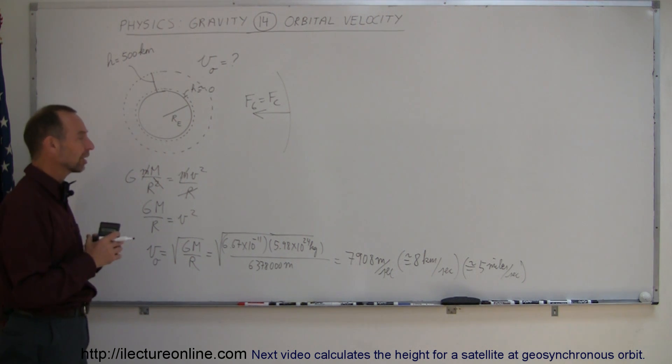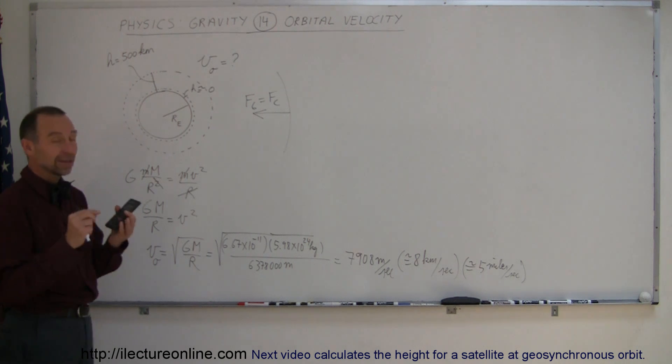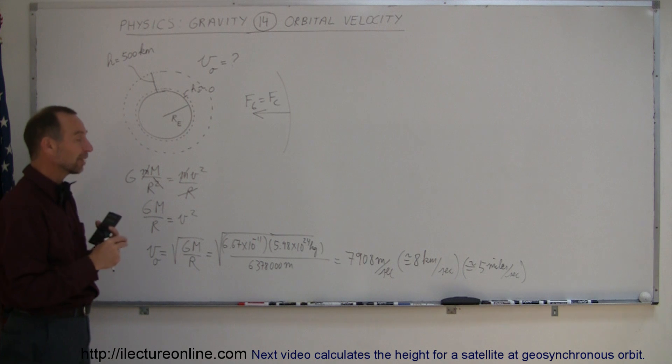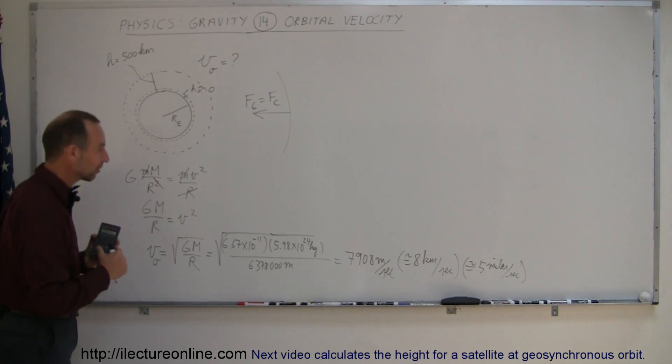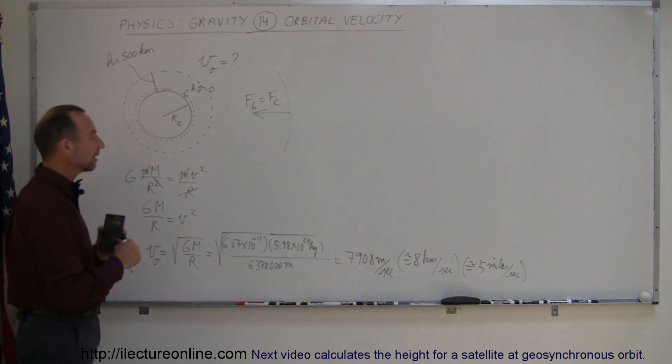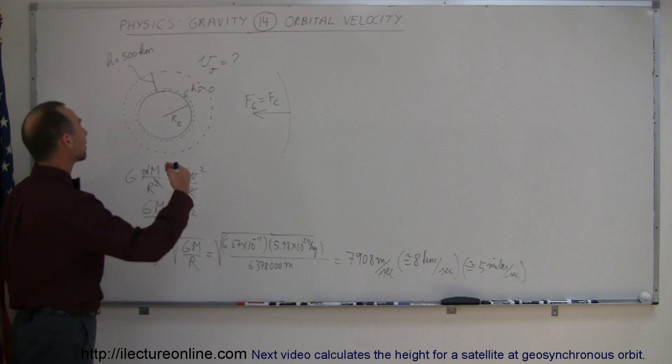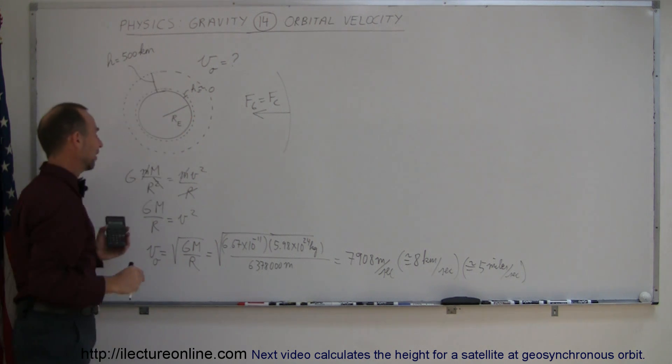Of course that's not quite realistic, because that close to the Earth, moving that fast through the atmosphere, everything would heat up tremendously, and it would probably burn up from the heat developed on the spacecraft. And secondly, you'd be running into trees and buildings and mountains. It just wouldn't work. So you want to be above the atmosphere, let's say, at a height of 500 kilometers.